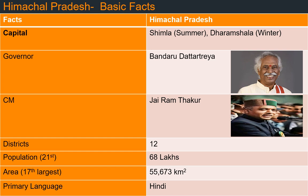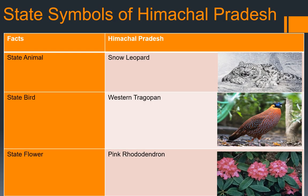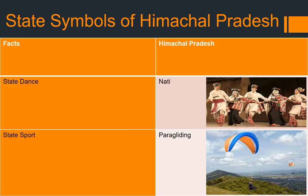The language here is Hindi. State symbols of Himachal Pradesh: state animal is Snow Leopard, state bird is Western Tragopan, state flower is Pink Rhododendron, state dance is Naati, and state sport is Paragliding.